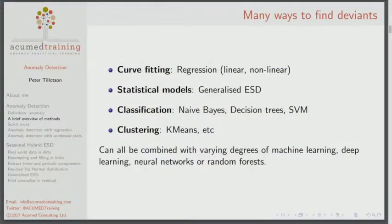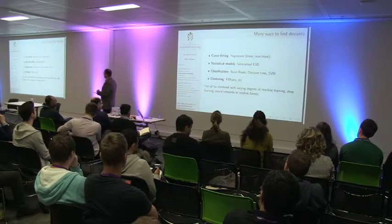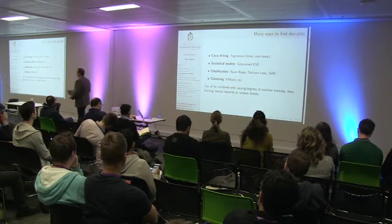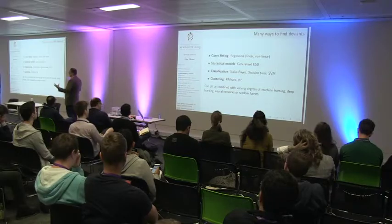There are lots of ways of doing anomaly detection: curve fitting, regression, polylines, statistical methods. Classification typically starts with labelled data — it's associated with supervised machine learning, where for a sample of data you know the categories and can use old data to learn them and tag new data. Clustering is typically related to non-labelled data — unsupervised — and tries to use mutual similarity to group things together.